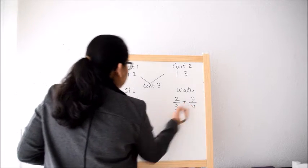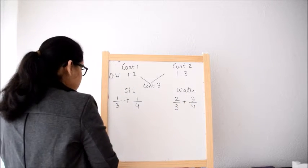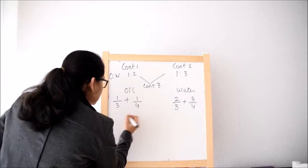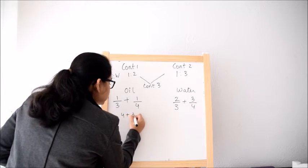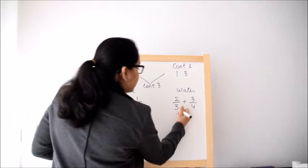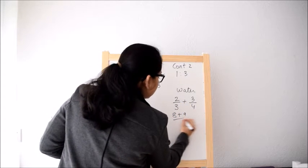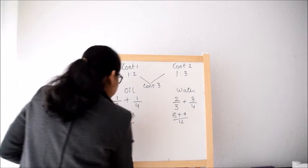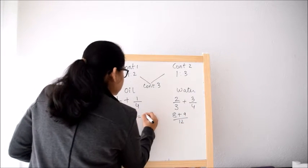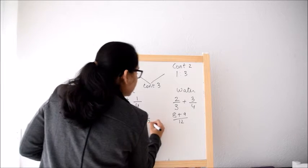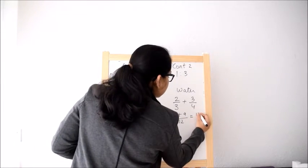So when we add them, then we will get 4 plus 3 by 12 and 8, we'll take the LCM plus 9 by 12. So this will become 7 by 12 and this will become 17 by 12.